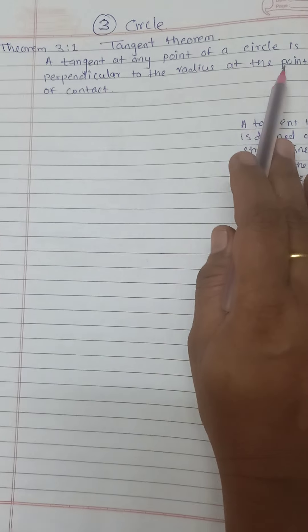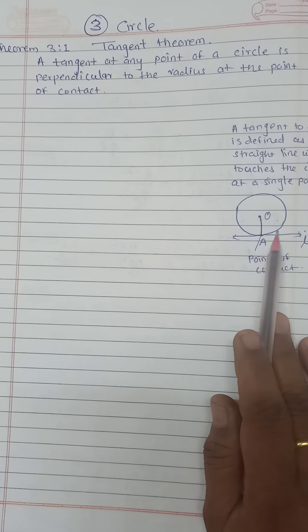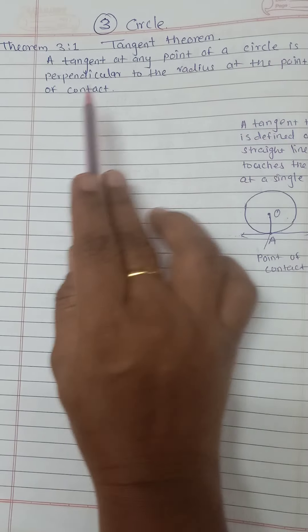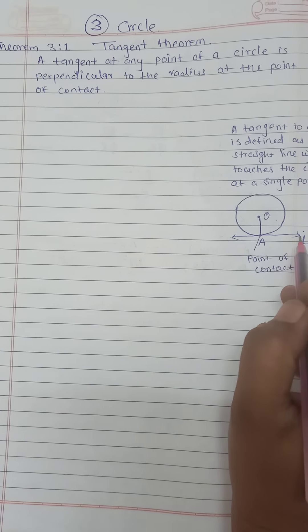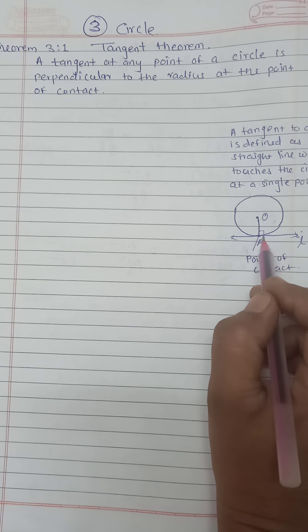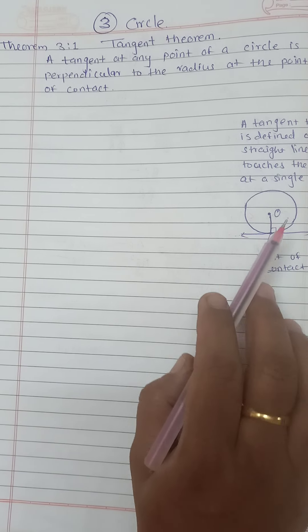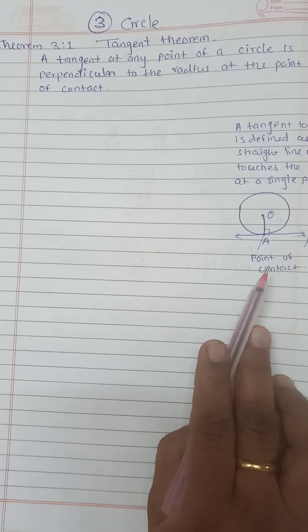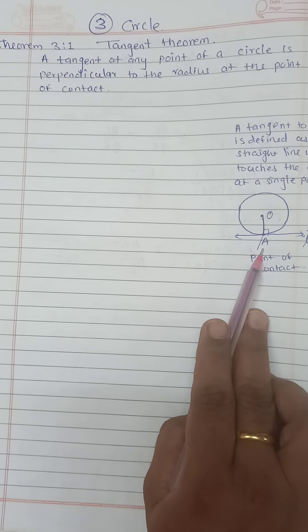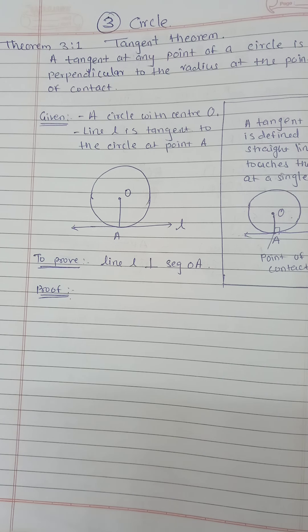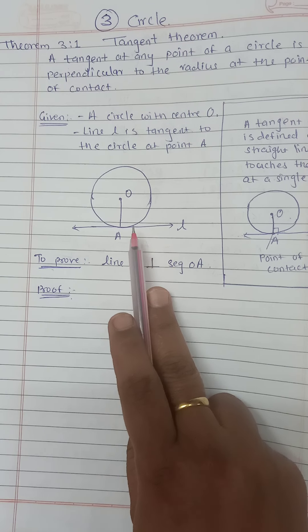Now, in this theorem, we have to prove that the tangent is given at any point of a circle and that it is perpendicular to the radius at that point. So we have to prove that the tangent and radius are perpendicular to each other. It is given that a circle with center O, L is the tangent at point A, and we have to prove that OA is perpendicular to line L. This is the diagram.